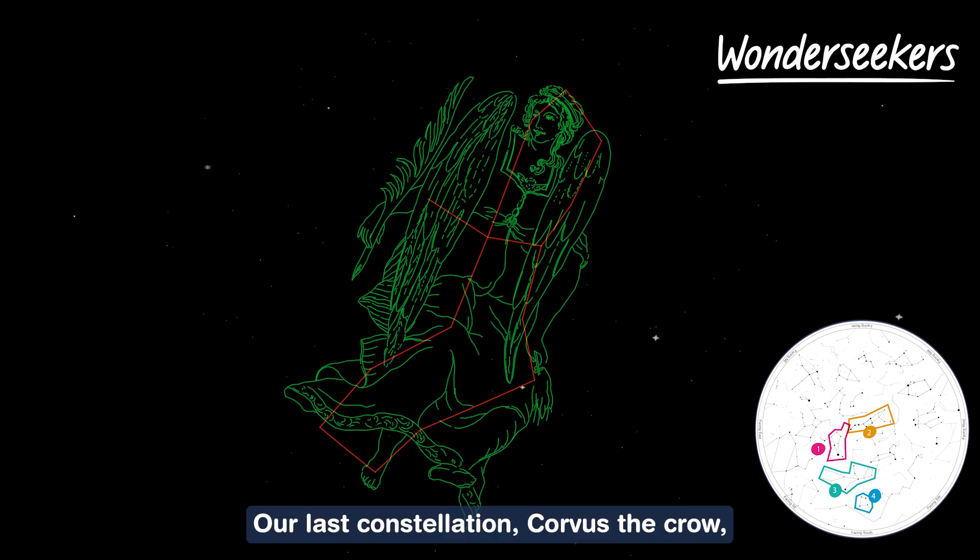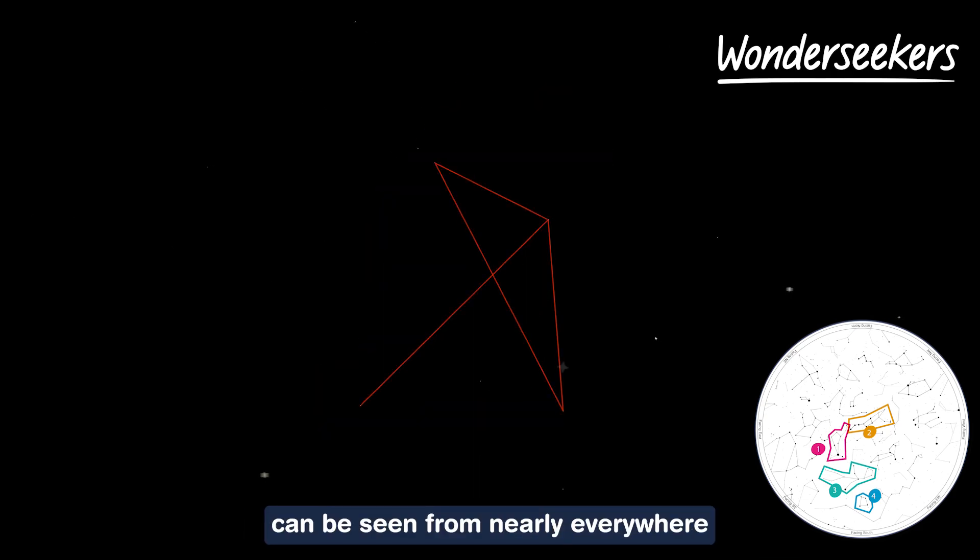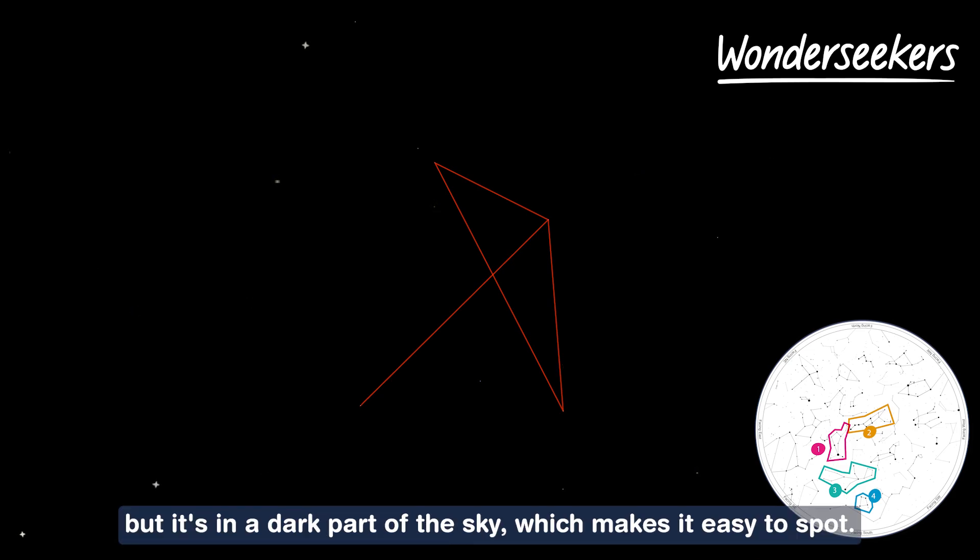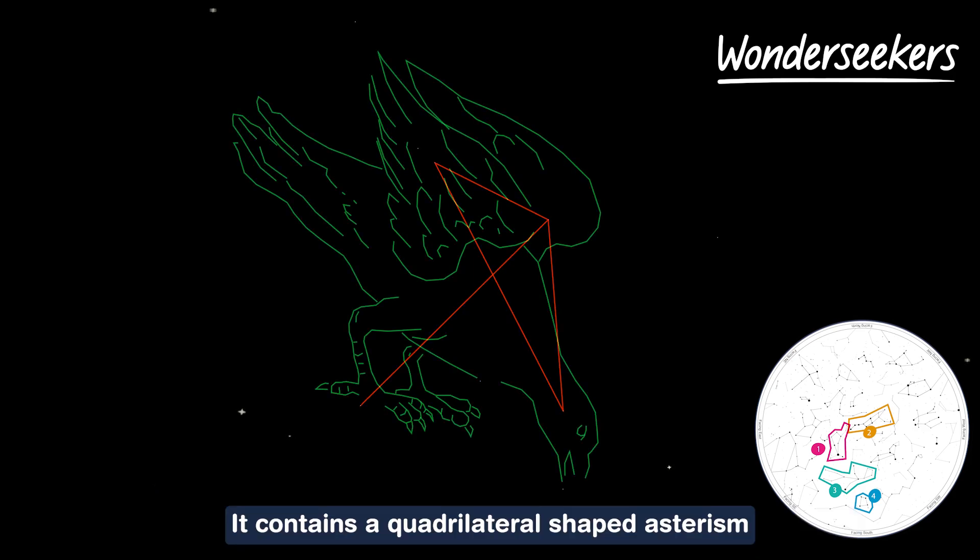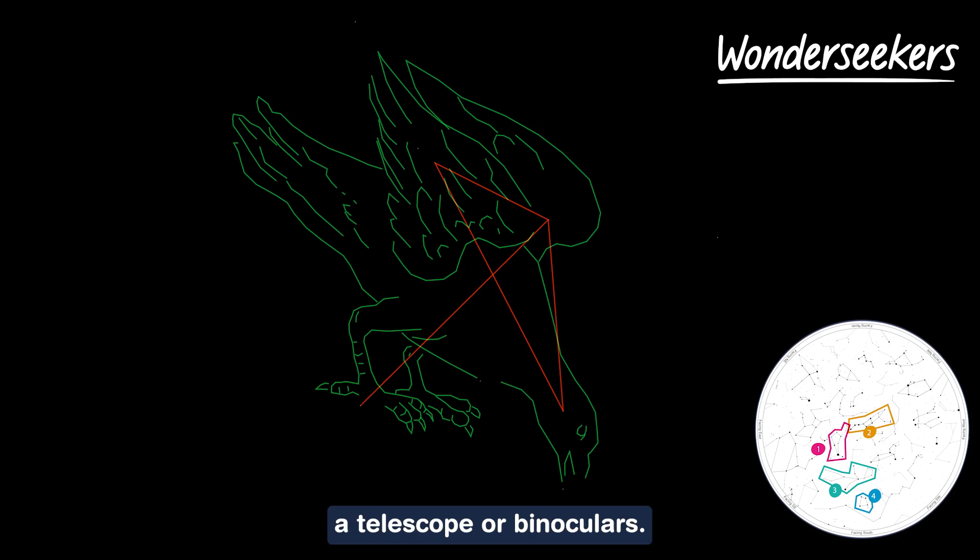Our last constellation, Corvus the crow, can be seen from nearly everywhere on Earth from late March to June. It's another dim group of stars but it's in a dark part of the sky which makes it easy to spot. It contains a quadrilateral shaped asterism known as Spica Spanca or the sail which can be picked out without needing a telescope or binoculars.